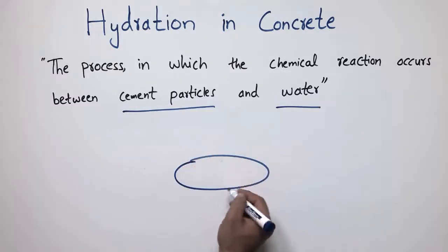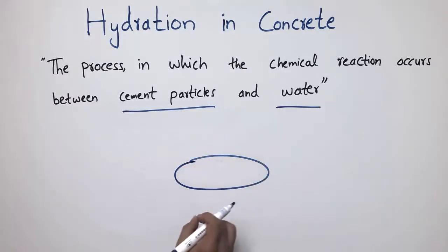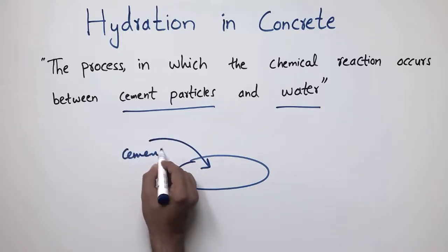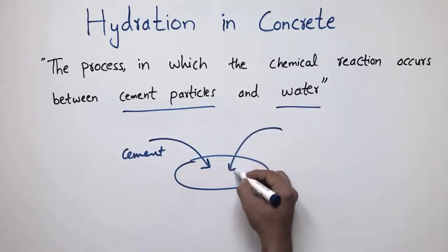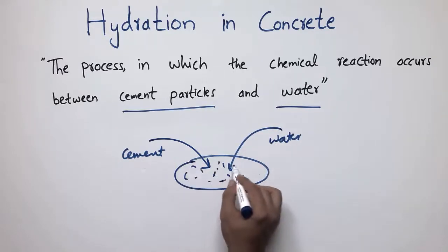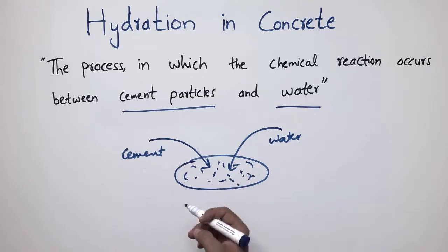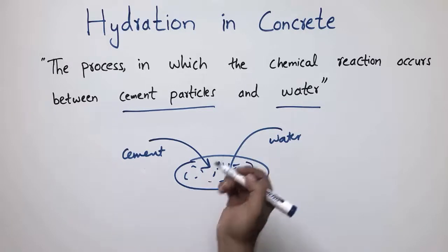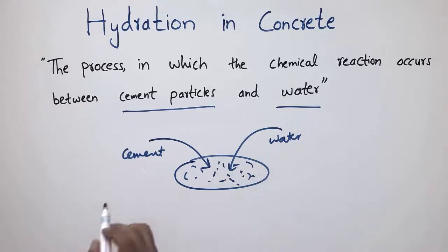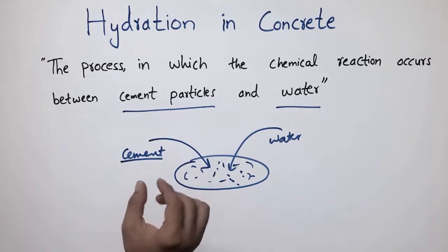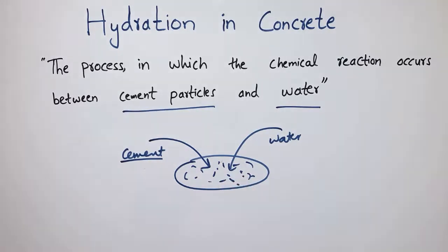For example, consider a bucket in which we mix cement particles in water. When we pour the cement and water together, a chemical reaction occurs between these two. What happens is there is some release of energy from this chemical reaction, which is also called hydration energy.